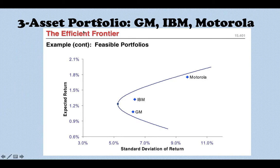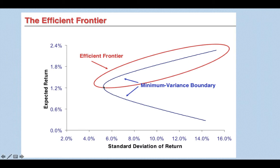This curve is called the efficient frontier. You want to move toward the upper-left portion because that gives you higher return and lower risk. You don't want the lower portion, which gives you lower return and higher risk. The efficient frontier represents portfolios with the lowest risk for a given level of return.